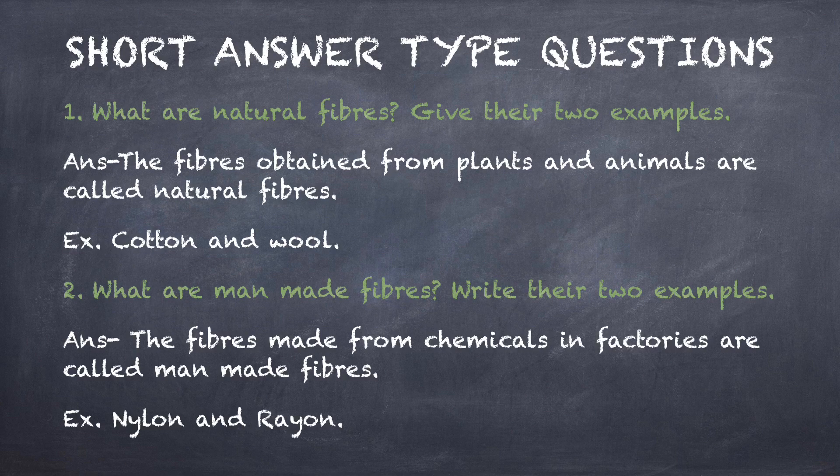Let's move on to short answer type questions. Your first question is: what are natural fibers? Give their two examples. The fibers obtained from plants and animals are called natural fibers. Two examples are cotton and wool. You may give other examples like silk, jute, linen, etc.